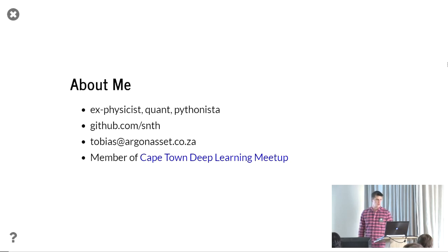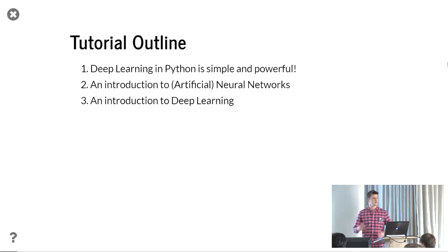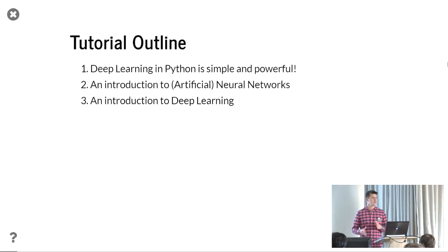For the outline of the tutorial, I've got three objectives. First, I just want to show you that deep learning in Python is simple but powerful and you can do all the cutting edge stuff. Then we'll take a step back and give an introduction to artificial neural networks. And then the third step, we'll try and get more into deep learning at an introductory tutorial level. What I'm aiming for is autoencoders — so 2006 to 2010 level. We're not going for quite the latest cutting edge stuff, but hopefully it will give you an introduction to the field.